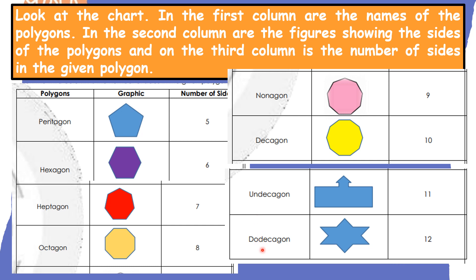Let's proceed to dodecagon. Dodecagon has twelve sides. Let us count: one, two, three, four, five, six, seven, eight, nine, ten, eleven, twelve. Correct — we have twelve sides for dodecagon.